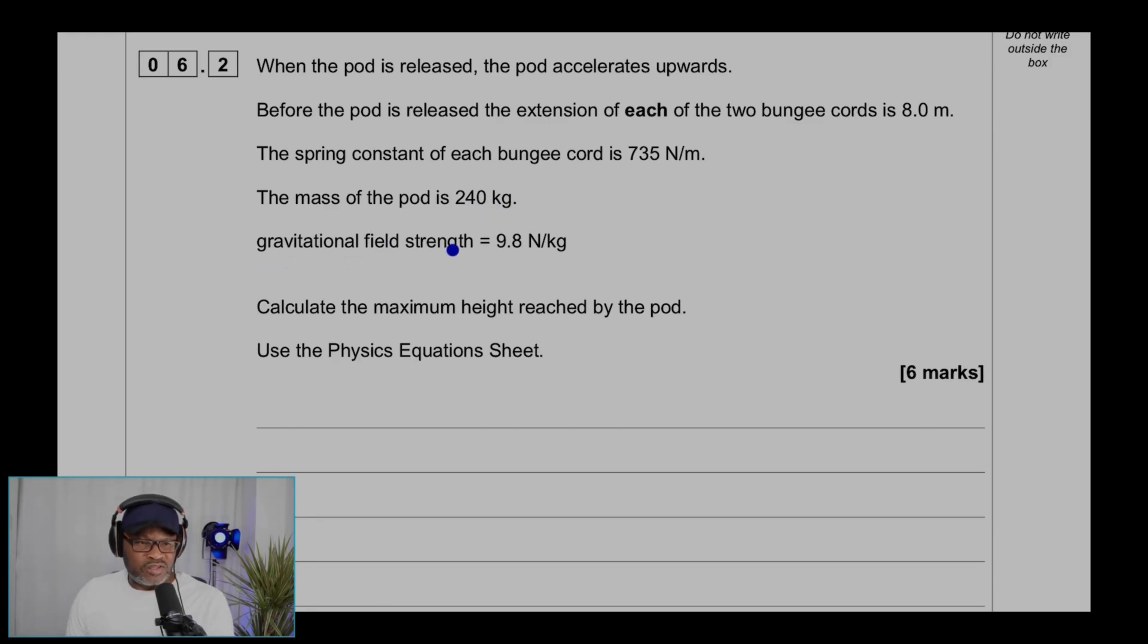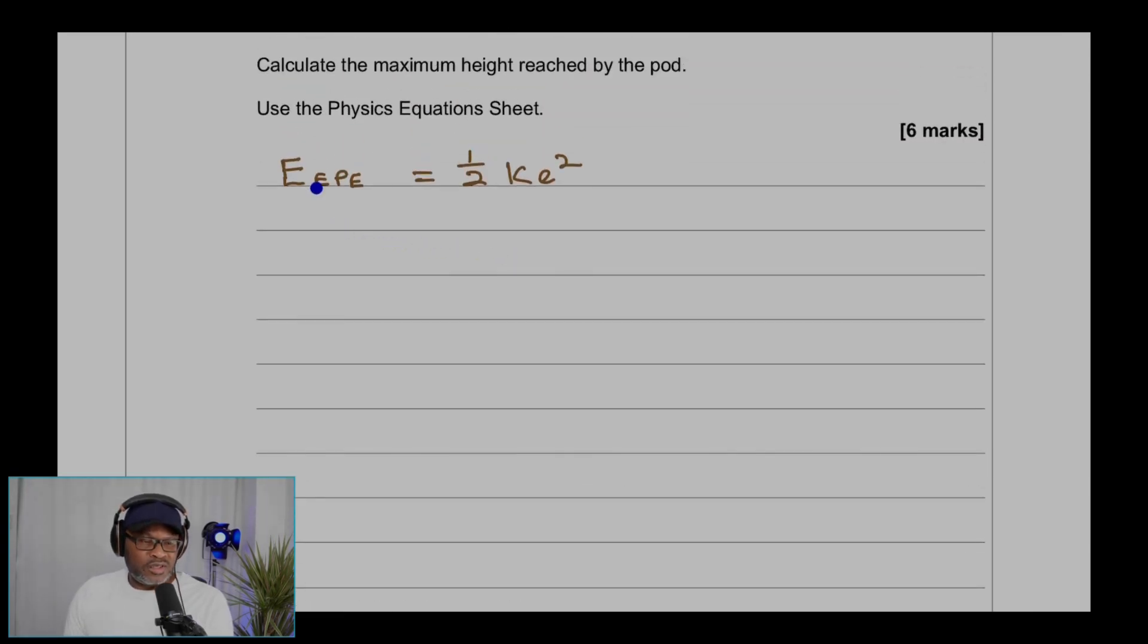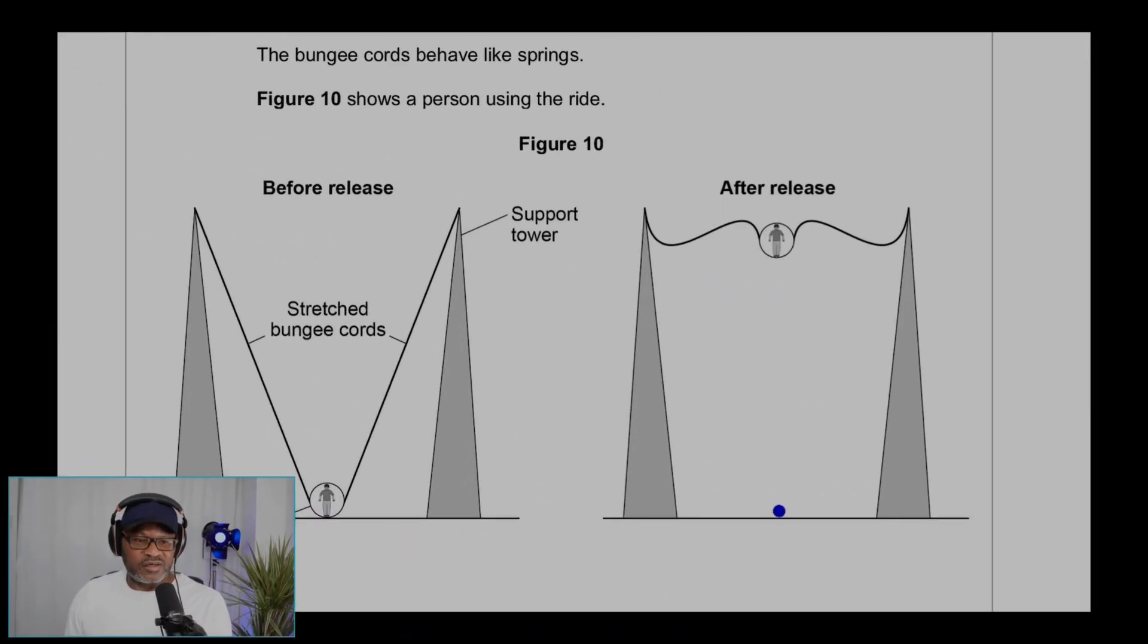Gravitational field strength equals 9.8 newtons per kilogram. Calculate the maximum height reached by the pod using the physics equations sheet. First, the elastic potential energy equation is E_EPE = ½ke². This energy stored will be converted into gravitational potential energy: E_GPE = mgh.